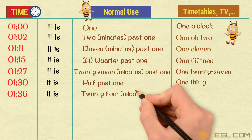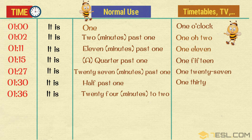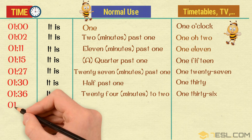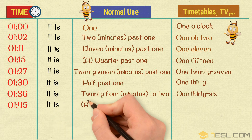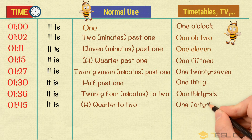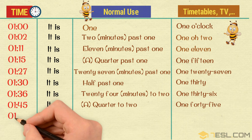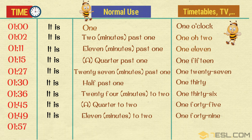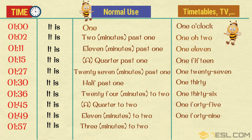24 minutes to two — 1:36. A quarter to two — 1:45. 11 minutes to two — 1:49. 3 minutes to two — 1:57.